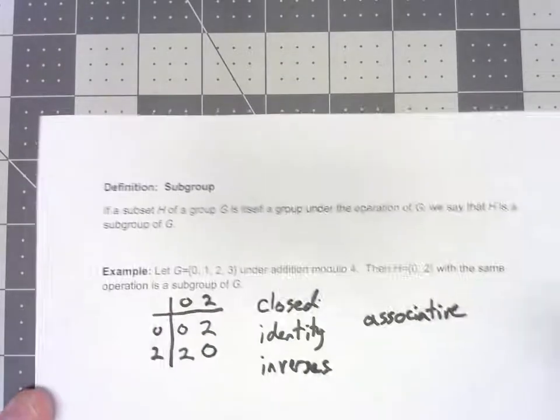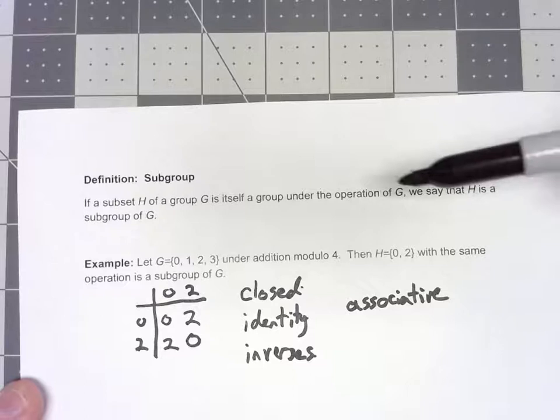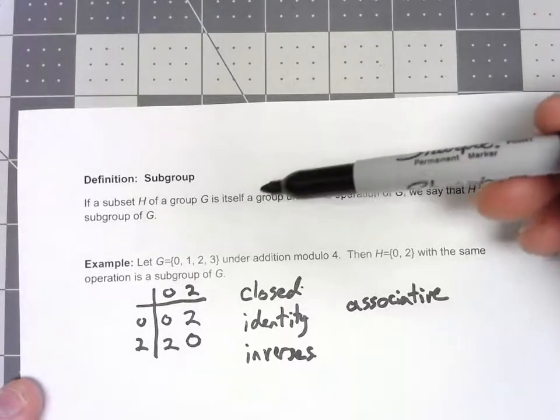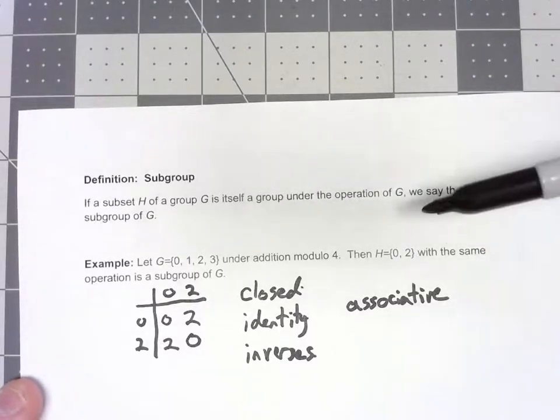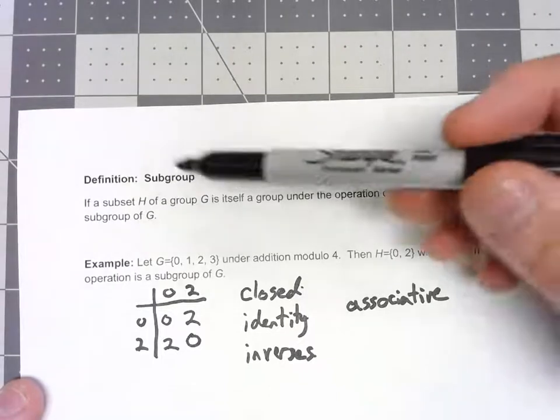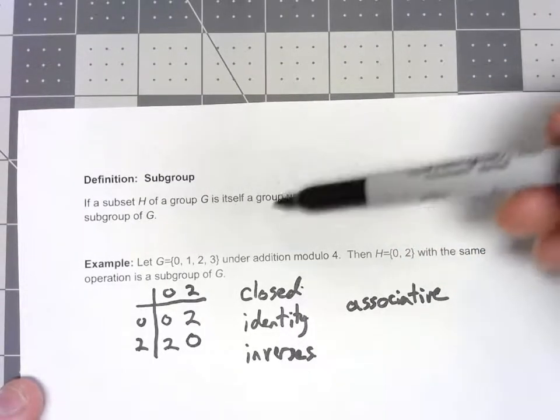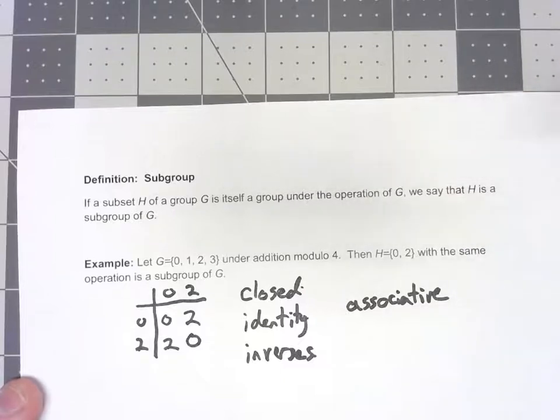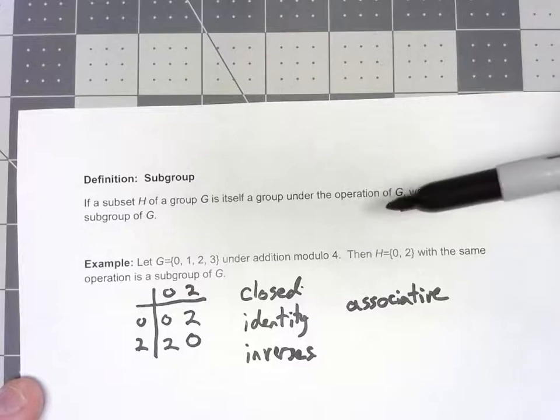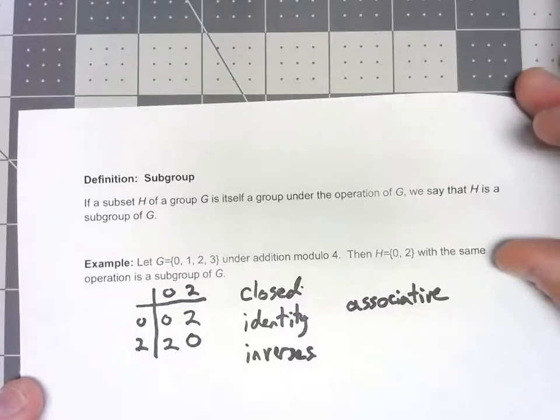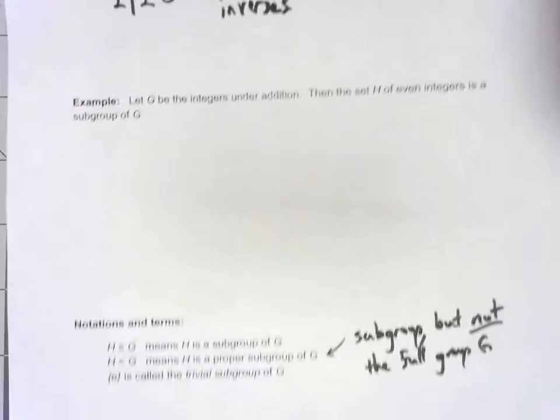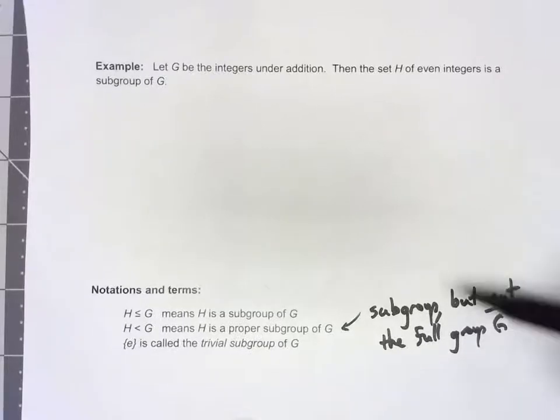Because if we go back to our original definition here of a subgroup, there's nothing that prevents G from being a subgroup of itself. G is a subset of itself. Because G is a group, it is a group under the operation of G. So G is a subgroup of itself but not a very interesting one. So often we're going to say it needs to be a smaller set. It needs to have not all of G and we'll call that a proper subgroup.